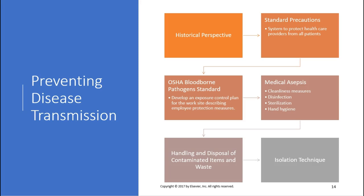For preventing disease transmission, historically we had standard precautions — a system to protect healthcare providers from all patients. OSHA's bloodborne pathogen standards develop an exposure control plan for the work site describing employee protection measures. Medical asepsis includes cleanliness measures, disinfection, sterilization, and hand hygiene — hand hygiene has been the biggest focus — as well as handling contaminated items and waste and isolation techniques.